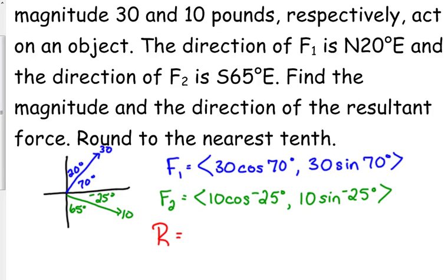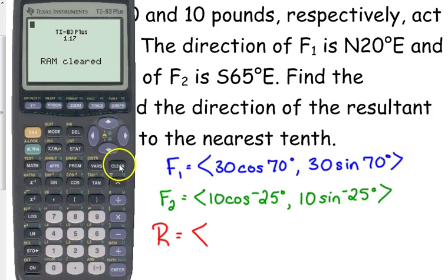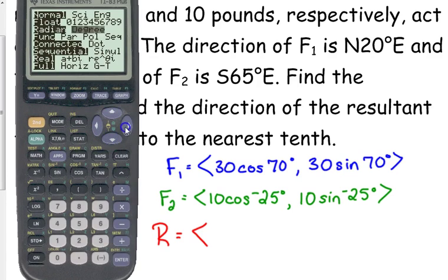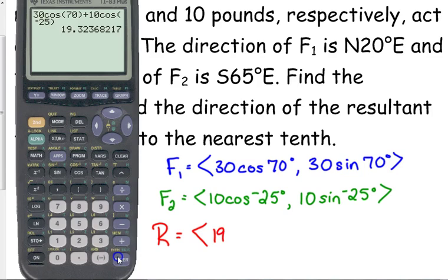Alright. So the resultant is going to add those two together. So just to kind of keep my calculations precise what I'm going to do is I'm going to make sure I'm in degree mode and then I'm just going to type in 30 cosine of 70 close my parentheses plus 10 cosine of negative 25. I'm going to go ahead and add my x components together. I get 19.324.